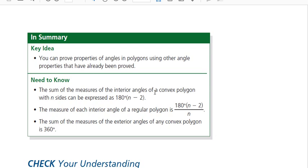The sum of the measures of interior angles of a convex polygon with N number of sides is 180 times N minus 2. The measure of each interior angle of a regular polygon we just talked about is this. And the sum of the exterior angles on a convex polygon is 360.